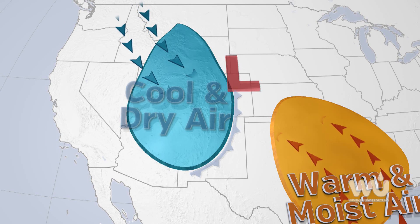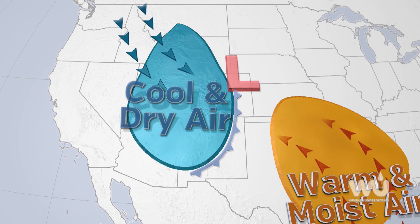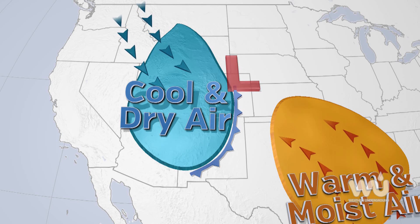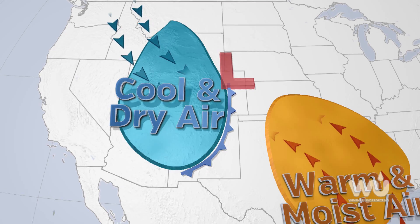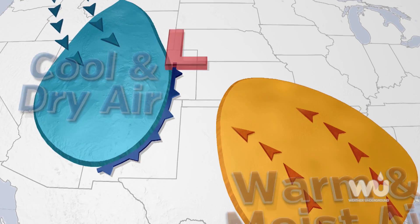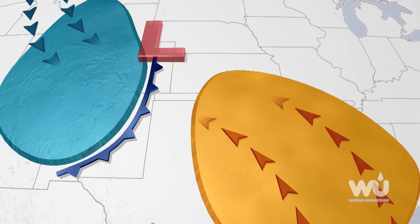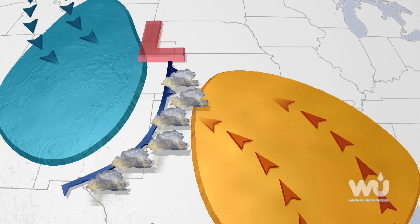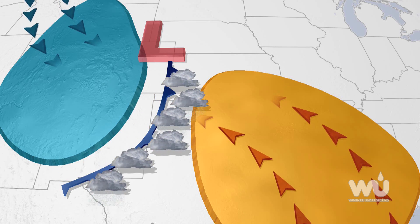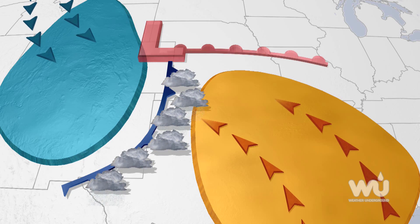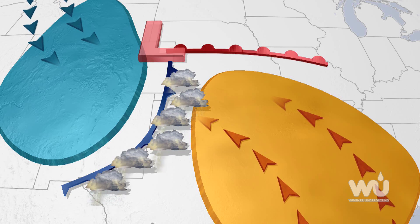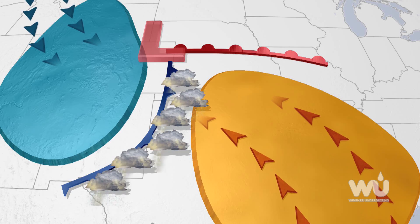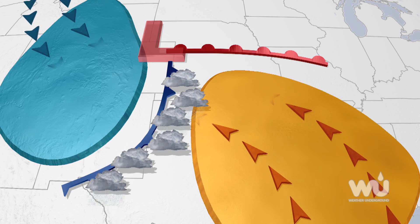Thus, the warm and humid air is present, the rising motion associated with the low-pressure system supplies the instability, and the cold front sweeps through as a trigger. This set-up can happen any time of the year, but the conditions are more favorable for severe thunderstorms in the warmer months of spring and summer into early fall. This is why tornadoes are more often a threat from late April to mid-June.